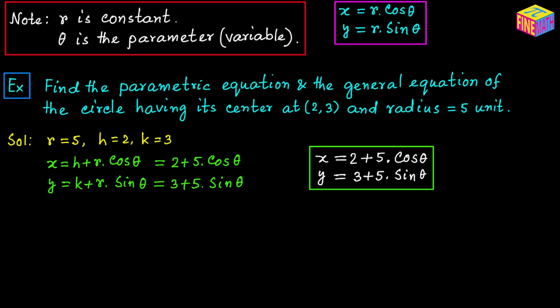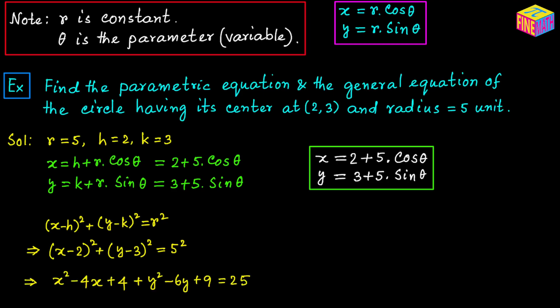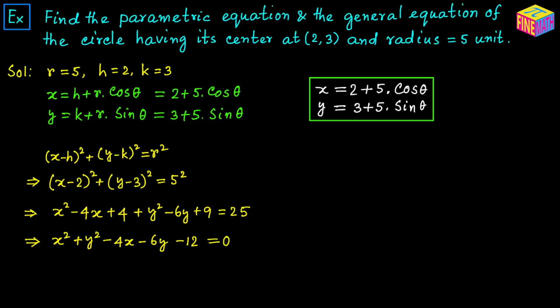Next let's derive the general equation. To derive the general equation we can begin with the fundamental equation: (x − H)² + (y − K)² = R². Plugging in the values, we get (x − 2)² + (y − 3)² = 5². Expanding, we get x² − 4x + 4 + y² − 6y + 9 = 25, and simplifying this gives x² + y² − 4x − 6y − 12 = 0, which is the general form of the equation of this circle.